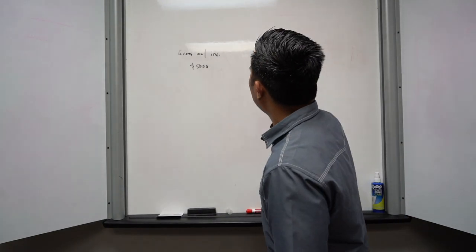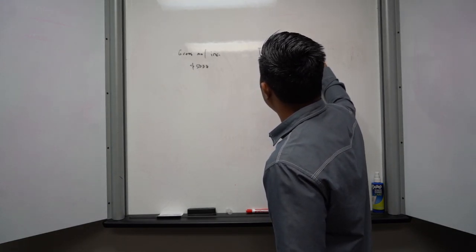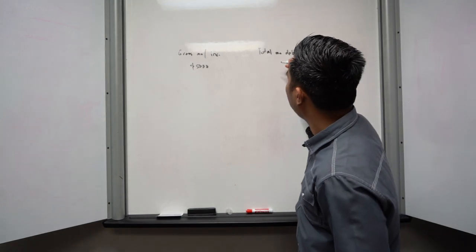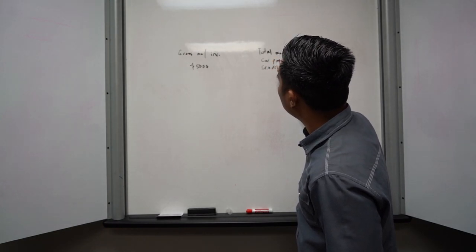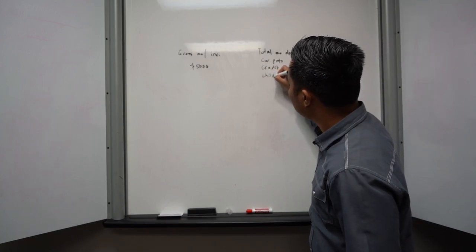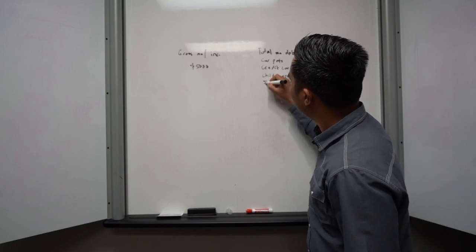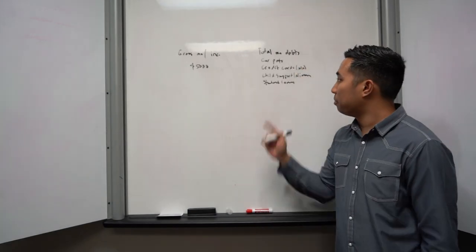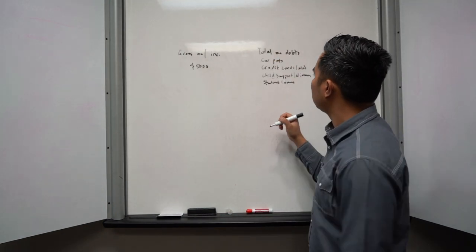So what you're going to do is you'll take that and then you're going to find out total monthly debts. And that's really just revolving debts and it's minimum payment. So things that include that are car payments, credit cards minimum payment, and then you'll have child support, alimony, student loans.